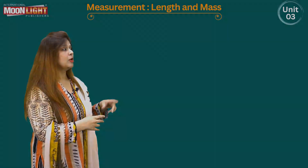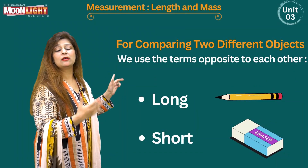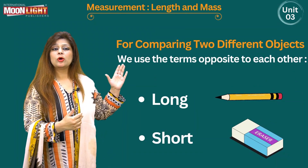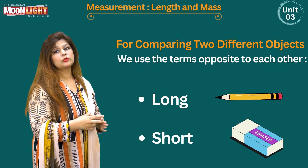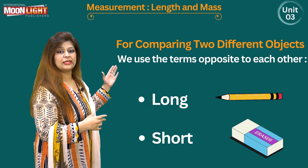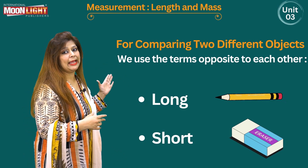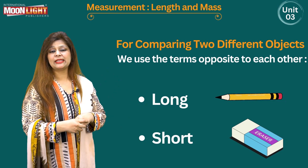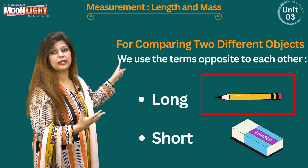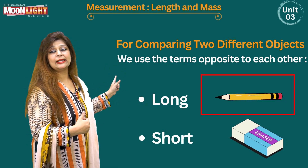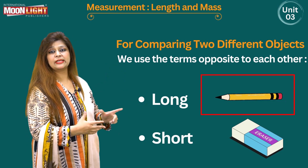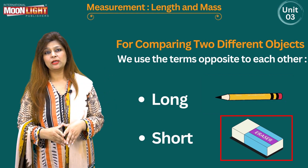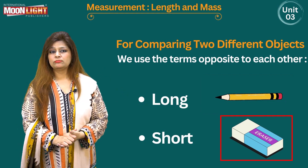For comparing two different kinds of objects, for example we have a pencil and an eraser. We can use two terms: long and short. So we can say that the pencil is long and the eraser is short.